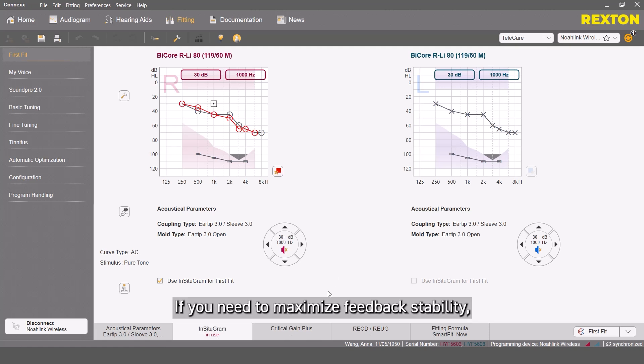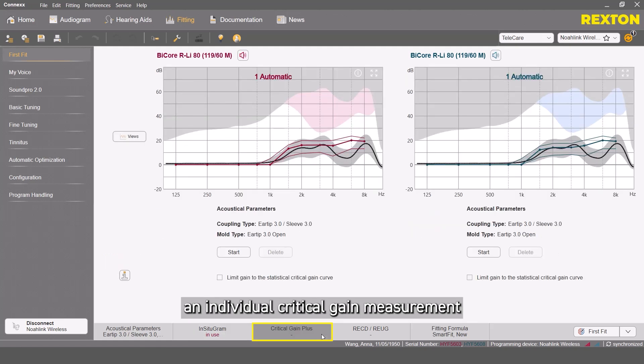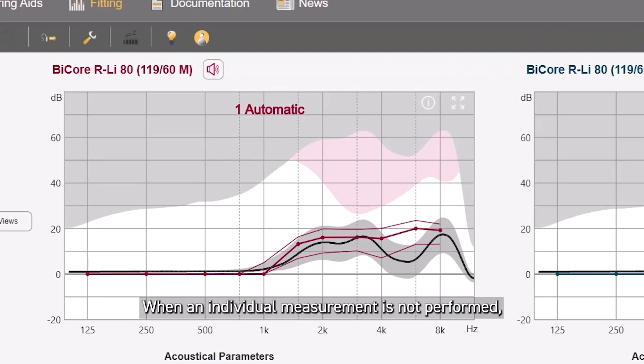If you need to maximize feedback stability, an individual critical gain measurement can be run in the Critical Gain Plus tab. When an individual measurement is not performed, a statistical critical gain curve is the baseline to calculate the targets.